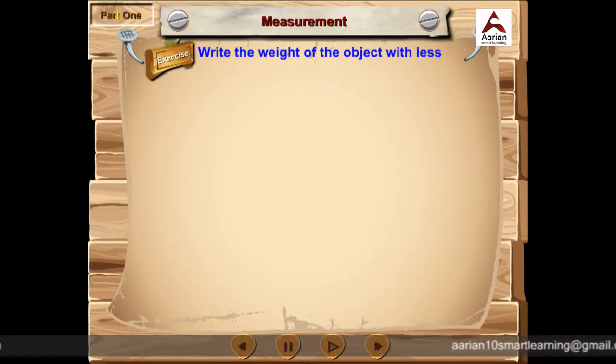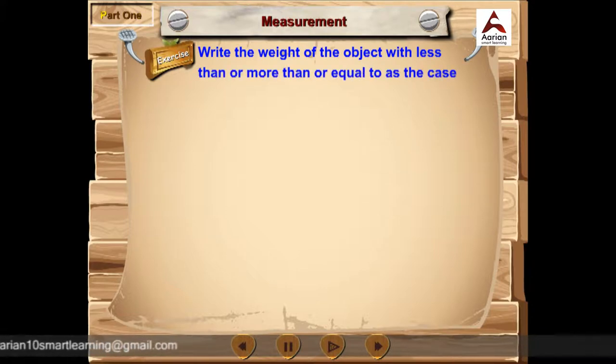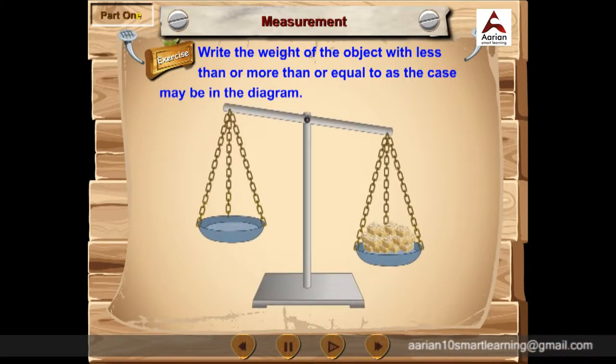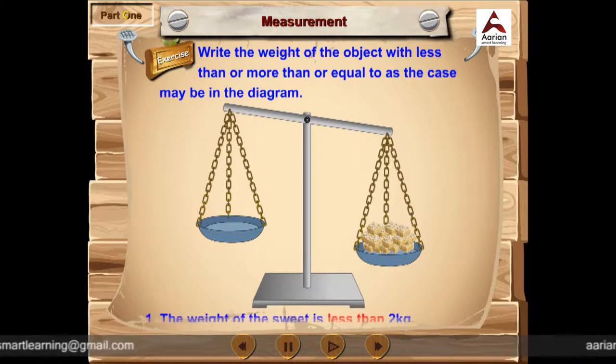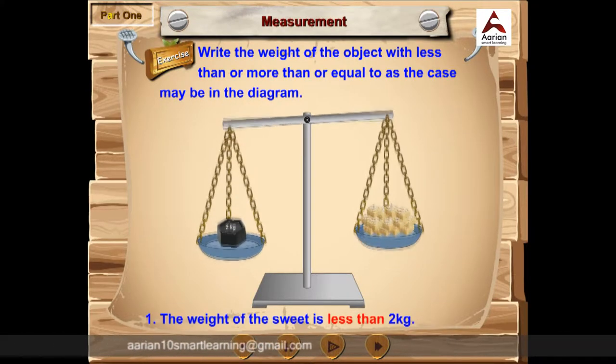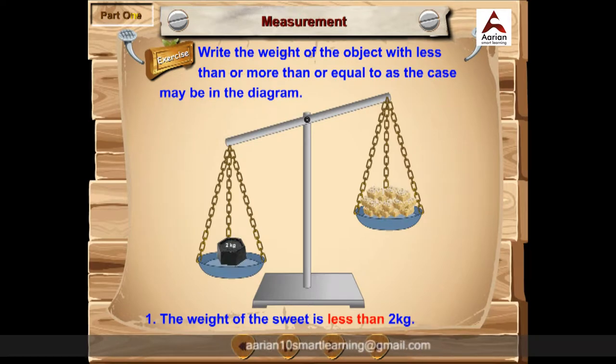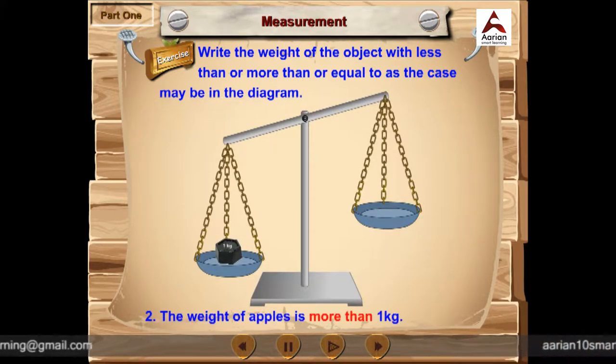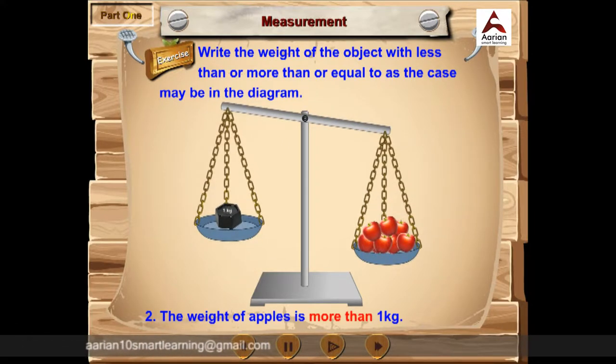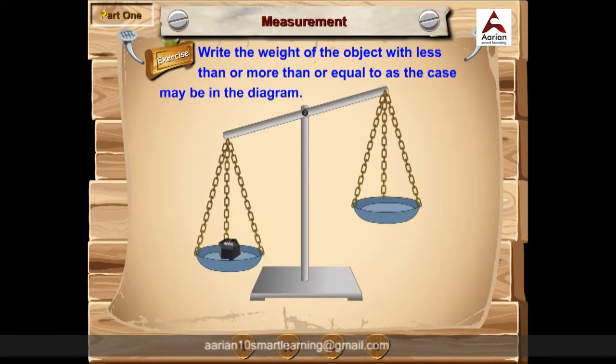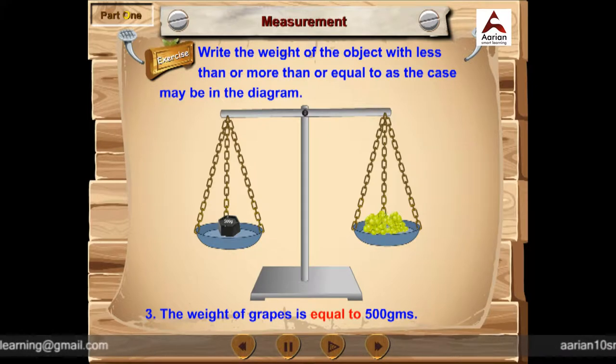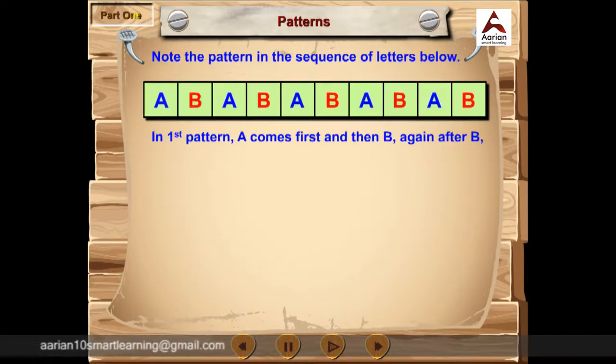Exercise. Write the weight of the object with less than or more than or equal to as the case may be in the diagram. 1. Observe the picture. Here, the weight of the sweet is less than 2 kg. 2. In second picture, the weight of apples is more than 1 kg. 3. In third picture, the weight of grapes is equal to 500 grams.